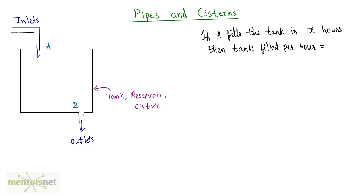So if A fills the tank in X hours, this inlet is pouring some liquid into the tank and if the tank gets filled up to the brim in X hours, then what will be the amount of tank filled per hour? Well, again like time and work, we assume the tank is similar to work. That is, we assume that the full tank is 1. So the fraction of tank that will be filled per hour will be 1 by X.